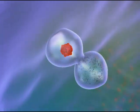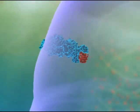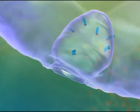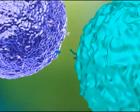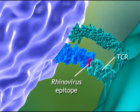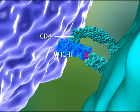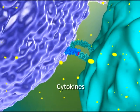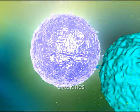The selected B cell takes in the rhinovirus, degrades it, and presents the rhinovirus epitope with its MHC2. Our mature helper T cell recognizes the rhinovirus epitope with its TCR, and the MHC2 with its CD4. Then, the helper T cell secretes chemical messengers, known as cytokines, that activate the B cell.